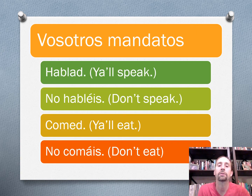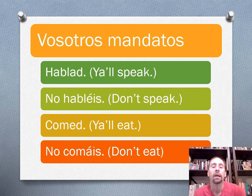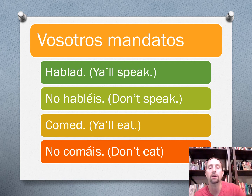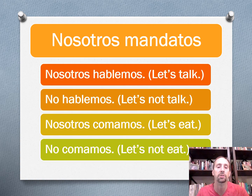Let's take a look at some vosotros commands. For AR and ER verbs, just drop the R and add a D for the affirmative. Hablad — y'all speak. Then for the negative, it's slightly different — it just needs the opposite ending, so A will change to E, E changes to A. No habléis — don't speak. Comed — y'all eat, or no comáis — don't eat. This is talking to vosotros, just used in Spain.